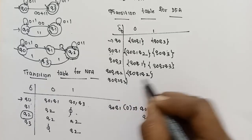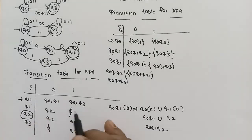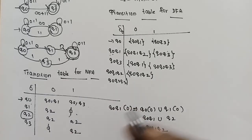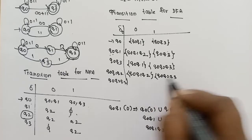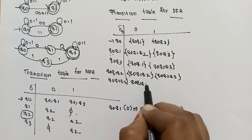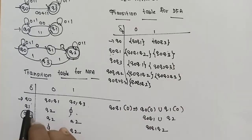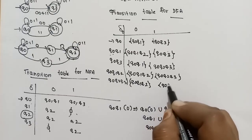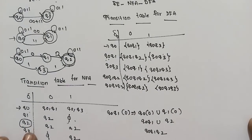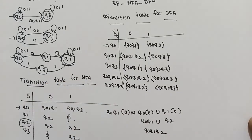Continuing state expansions: {Q0, Q1, Q2} on 1 = Q0 on 1, Q1 on 1, Q2 on 1 = {Q0, Q3} union empty union {Q2} = {Q0, Q2, Q3}. {Q0, Q2, Q3} on 0 = Q0 on 0 union Q2 on 0 union Q3 on 0 = {Q0, Q1} union {Q2} union empty = {Q0, Q1, Q2}. {Q0, Q2, Q3} on 1 = {Q0, Q3} union {Q2} union {Q2} = {Q0, Q2, Q3}.